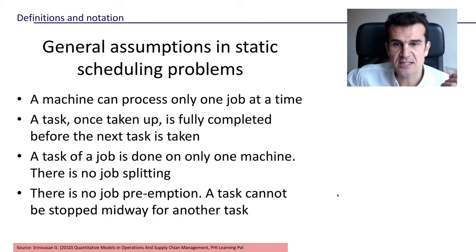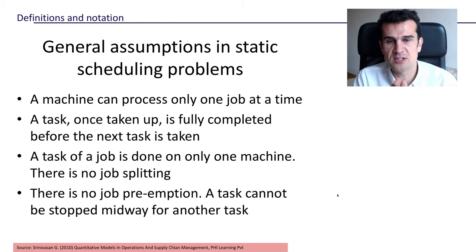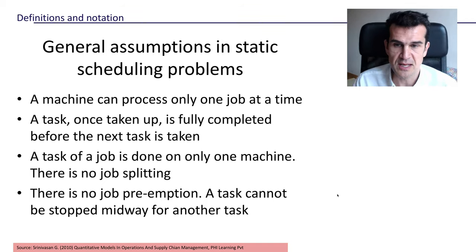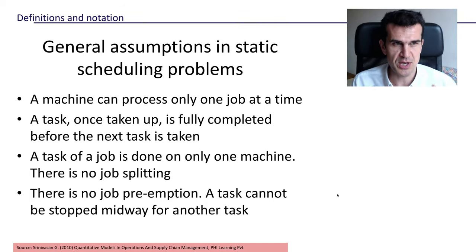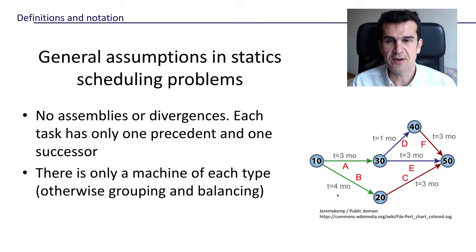Also, a task of a job is done on only one machine. You cannot split the task and send part of the task to different machines. There is also no job preemption, so basically we cannot interrupt a machine once it has started processing a certain task.